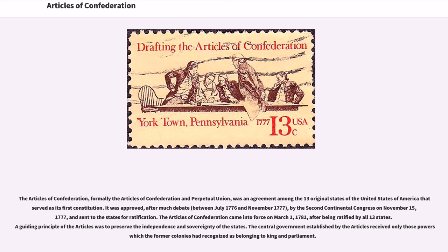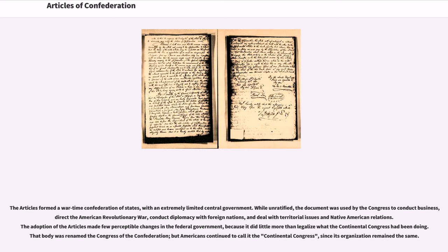The Articles of Confederation came into force on March 1, 1781, after being ratified by all 13 states. A guiding principle of the Articles was to preserve the independence and sovereignty of the states. The central government established by the Articles received only those powers which the former colonies had recognized as belonging to king and parliament. The Articles formed a wartime confederation of states, with an extremely limited central government.